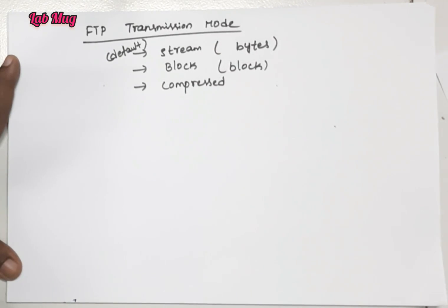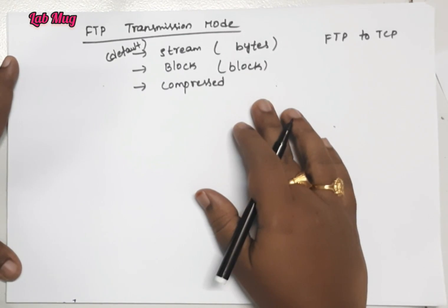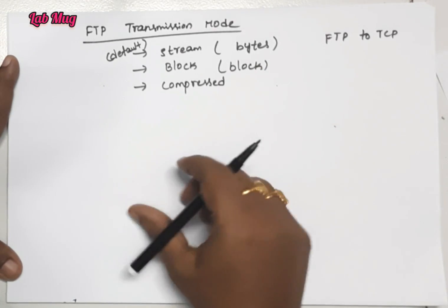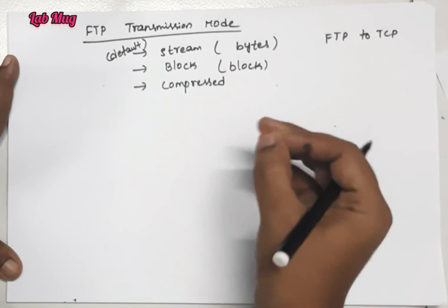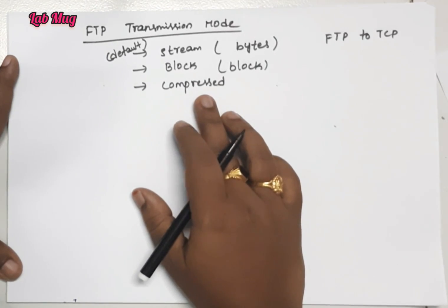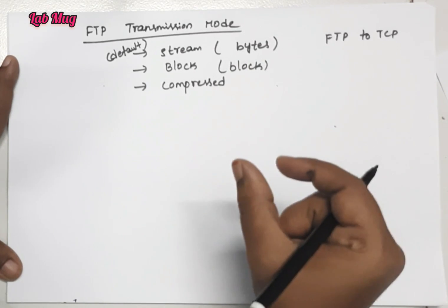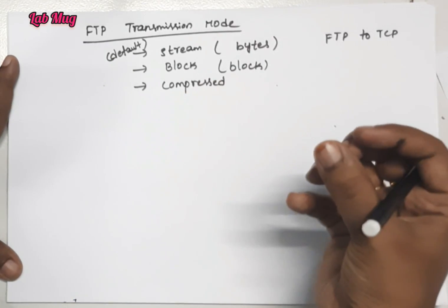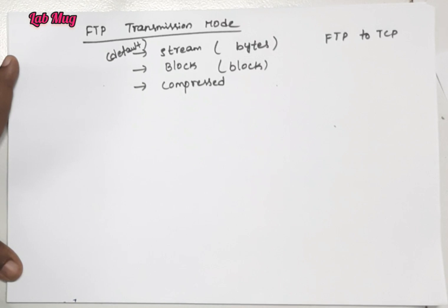Block mode: we transfer from FTP to TCP, that is file transfer protocol to transmission control protocol. In block mode, data is compulsorily delivered within blocks of data. Each block of data contains three bytes of header. Compressed mode: we need to compress the complete file - the entire file is compressed. That method is called compressed mode. In alarming situations where file size is large, compressed mode is selected.